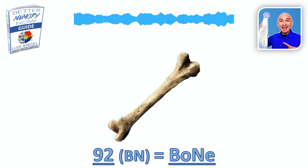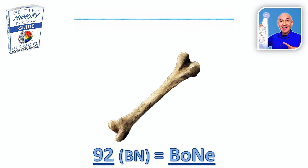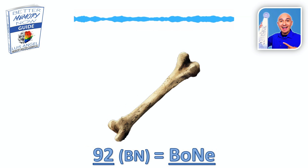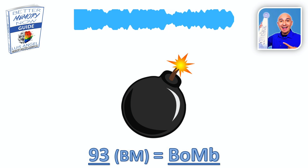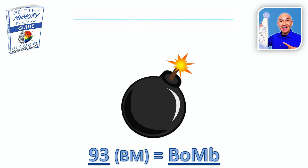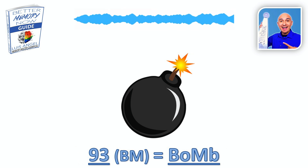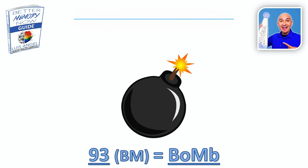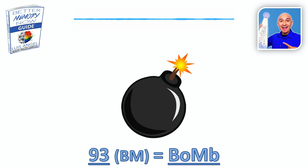92 is bone. Nine is the B sound, two is the N sound — throw in some vowels and we get bone. Picture a dog bone or a dinosaur bone; whatever you want, use that same image for 92. 93 is bomb. B for the nine, and for the three we have the M sound, but there is a silent B there as well for bomb. As long as you get the two major consonant sounds, you can use an extra little crutch to help you create these associations. 93 is bomb.